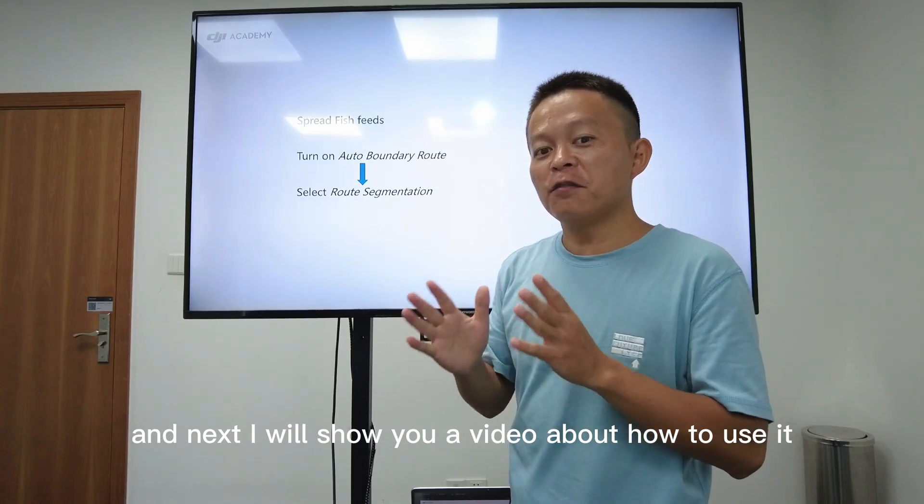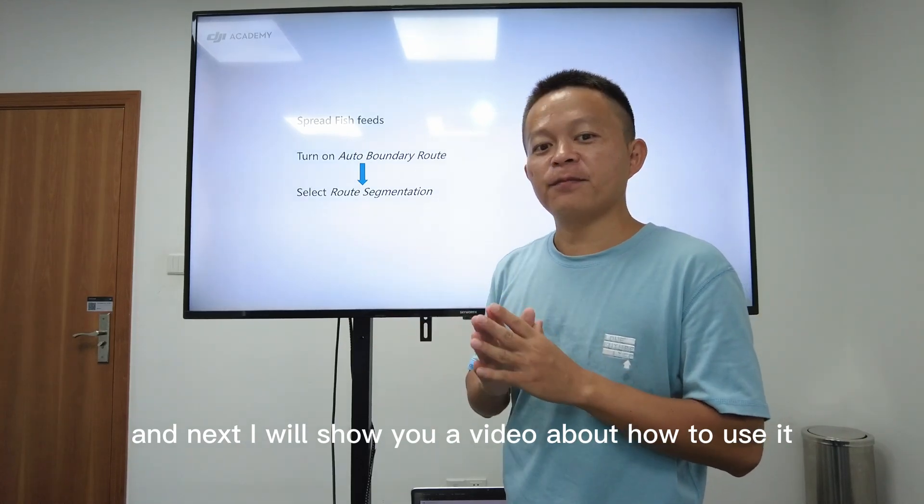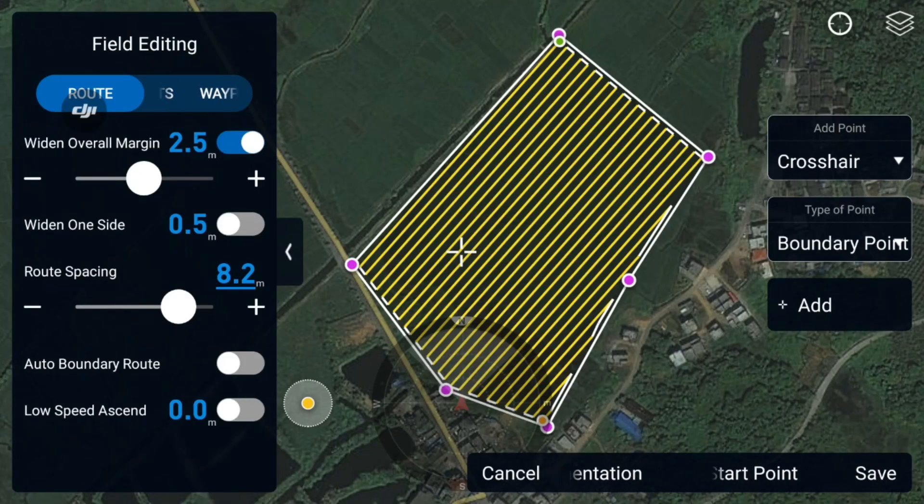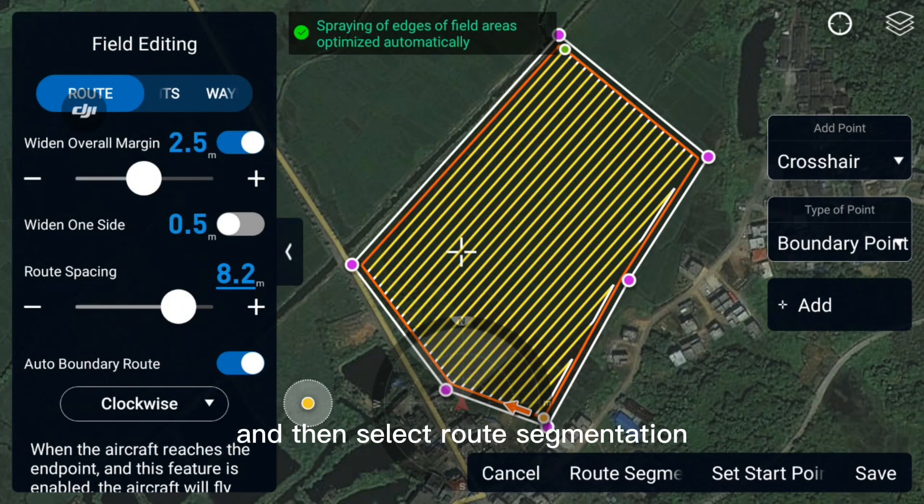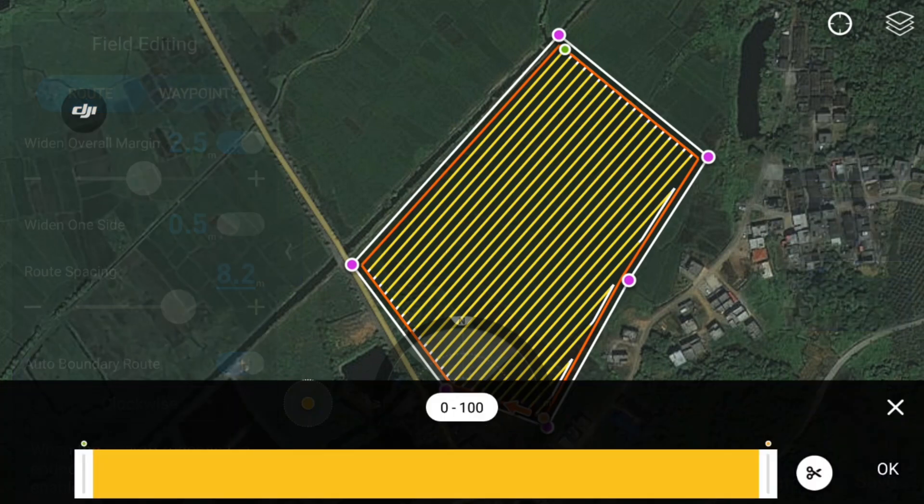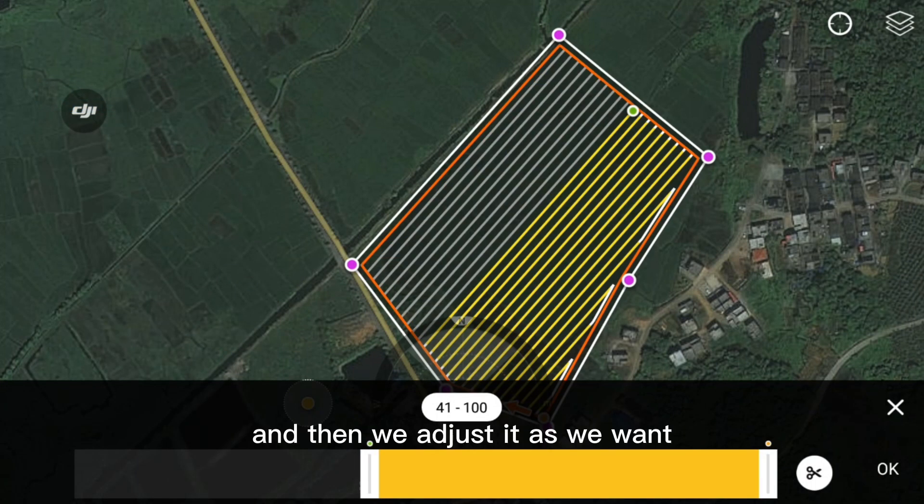And next I will show you a video about how to use it. Firstly we turn on auto boundary route and then select route segmentation. And then we adjust it as we want.